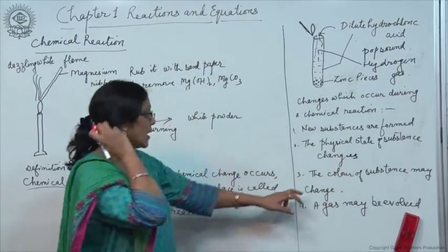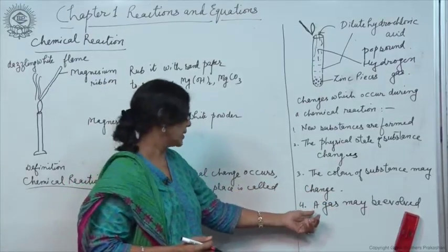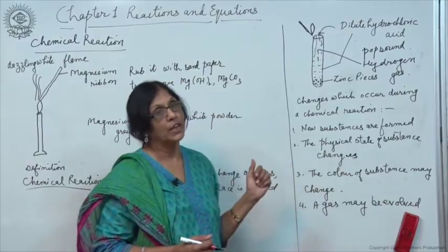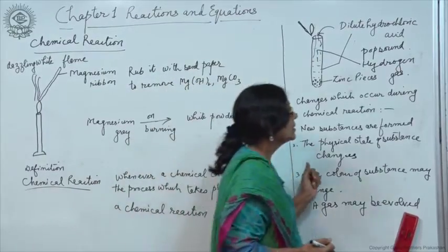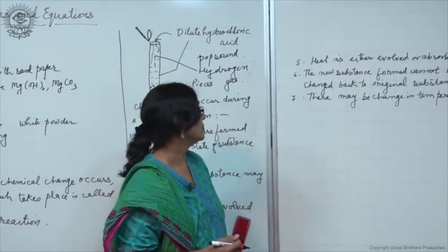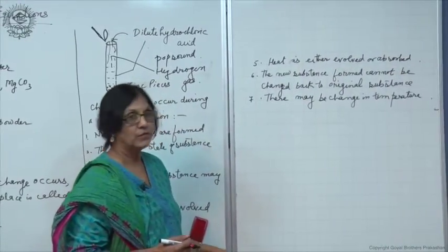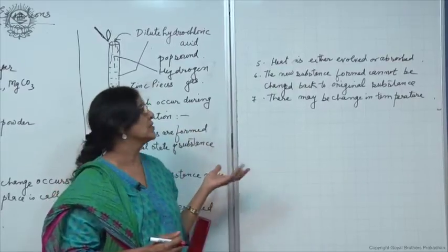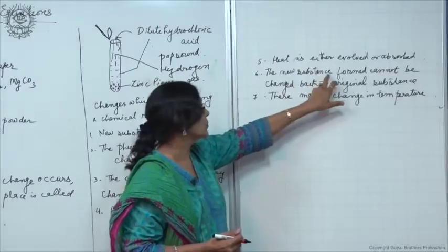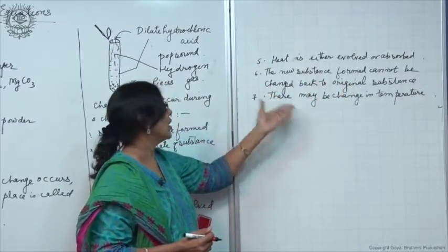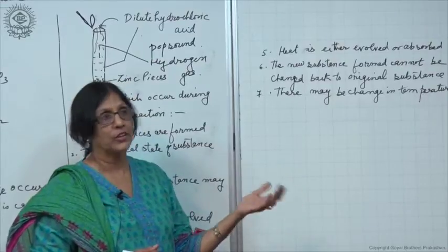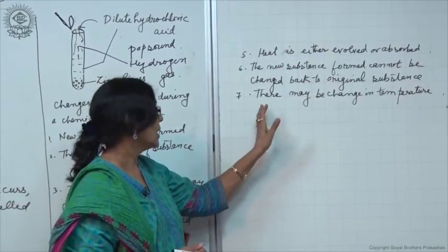The colour of the substance also may change. A gas may be evolved. As in this particular case, a gas has been evolved. Also, heat may either be evolved or absorbed. And we cannot get back the original substance in any case by changing the physical conditions. The new substance cannot be changed back to original substance by changing the temperature or pressure or anything.